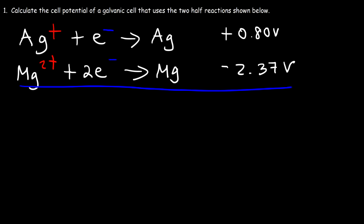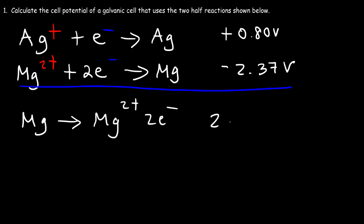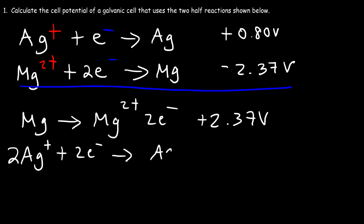So I'm going to reverse the second reaction, and the cell potential is now positive 2.37. The first reaction I'm going to leave the way it is, but multiply it by two so that the number of electrons will stay the same. If you multiply this reaction by two, the cell potential will not change — you shouldn't multiply by two. This is going to remain positive 0.8; it's not going to be 1.6. It doesn't work that way.